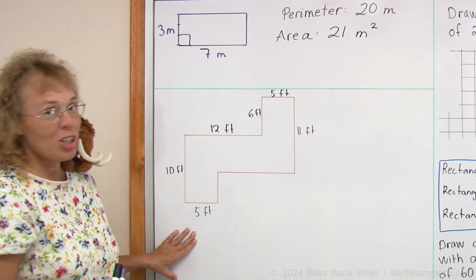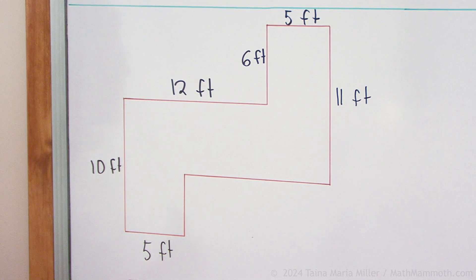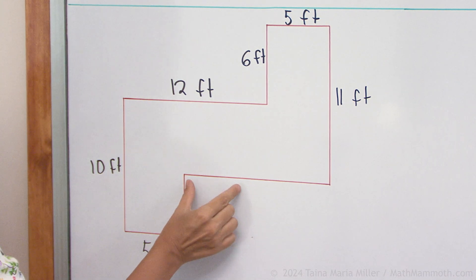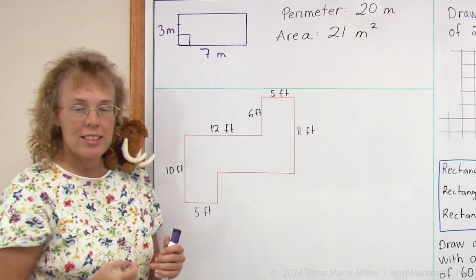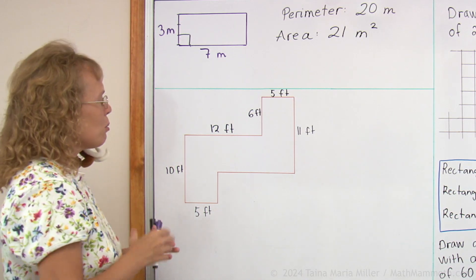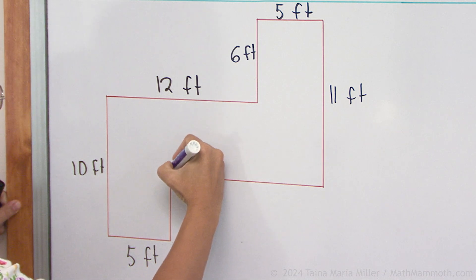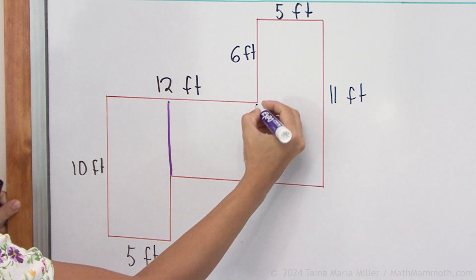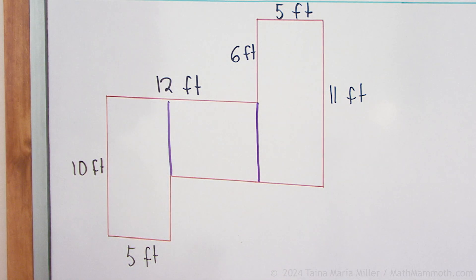Here I have a much more complex shape and we're going to figure out its area and perimeter. Notice that some of the side lengths are not given here. To find its area, we will divide it into rectangles. For example, I think the easiest way would be like this. Not the only way, but that's one way to divide it into rectangles.